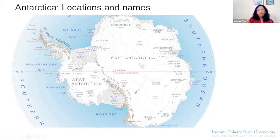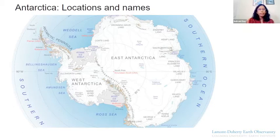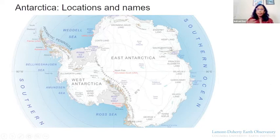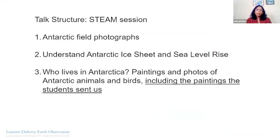Another important name to remember is McMurdo — that's the US base, and that's where we go. Scientists from the USA who work in Antarctica go to McMurdo to do field work. The ocean surrounding Antarctica is called the Southern Ocean and there are different seas. This map is available on the internet and you can look it up later. So now we see that Antarctica is really big, and it's worthwhile to try and understand how Antarctica is going to change in the near future because of climate change.